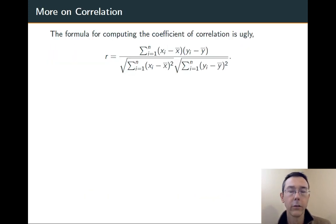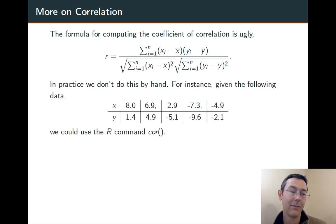Okay, so what about actually computing correlation? Short answer, you don't want to do it by hand. So, here's the formula. The observations in the data set are xi, yi. X bar is the sample mean for the x's and y bar is the sample mean for the y's. So, this is a pain in the butt to calculate. Fortunately, we don't really have to do that.